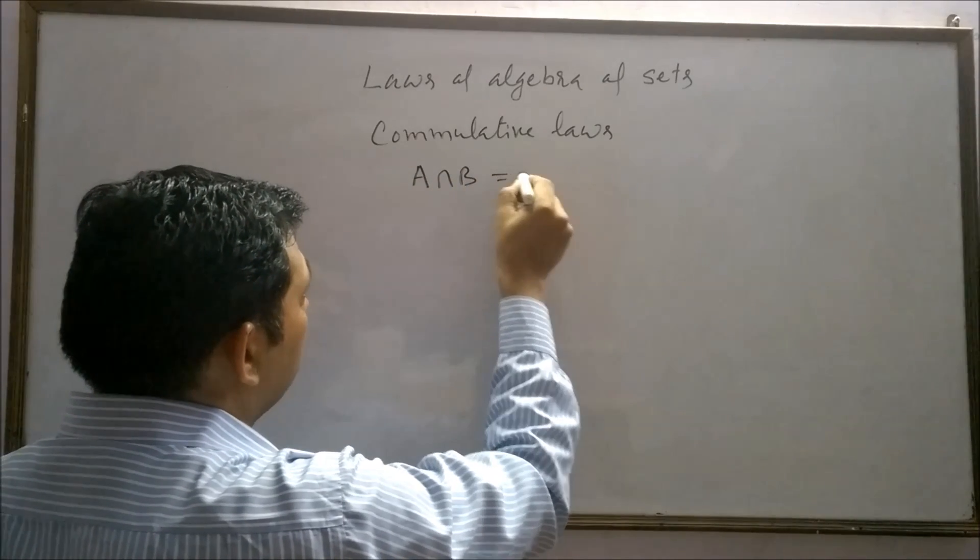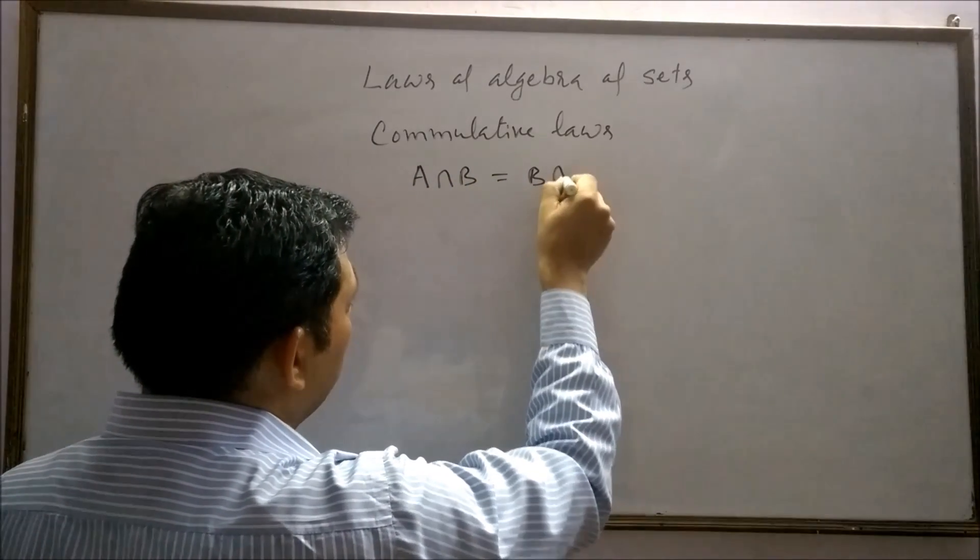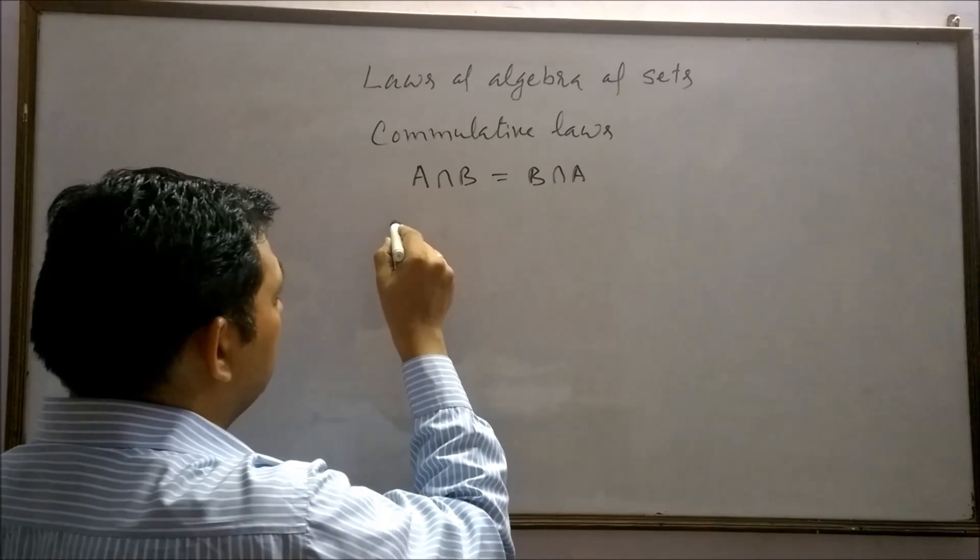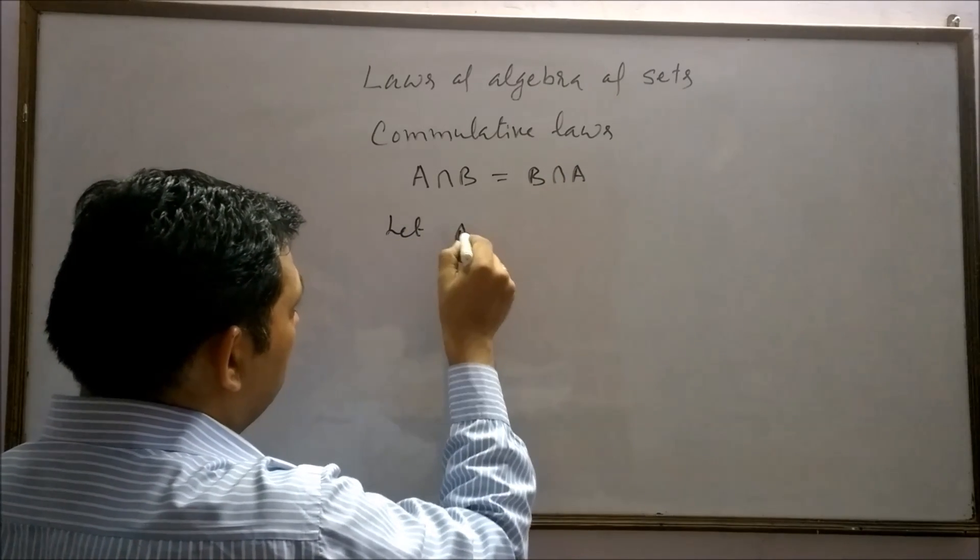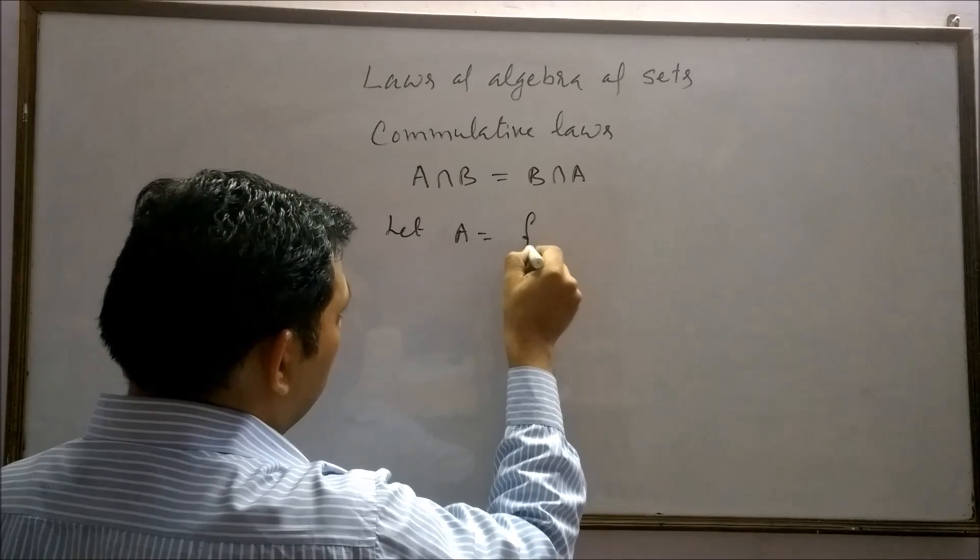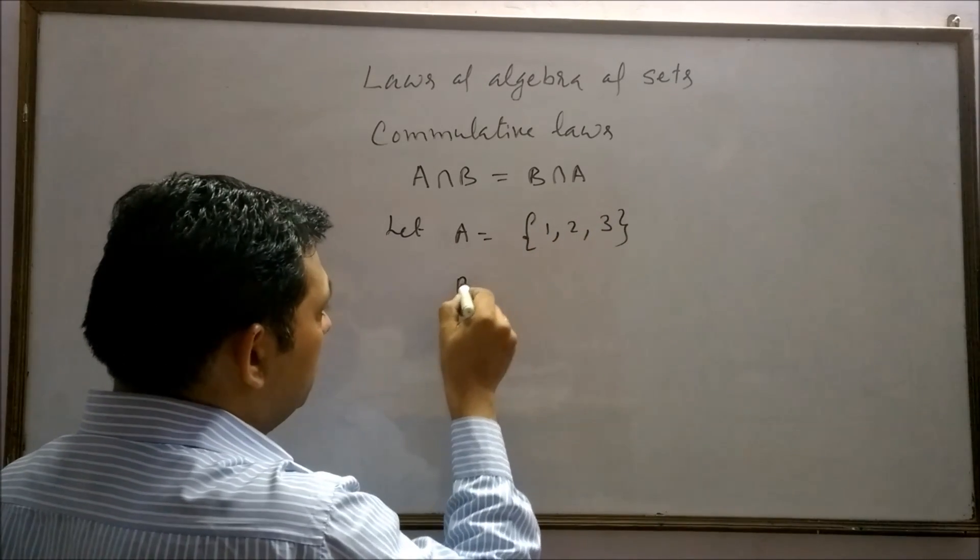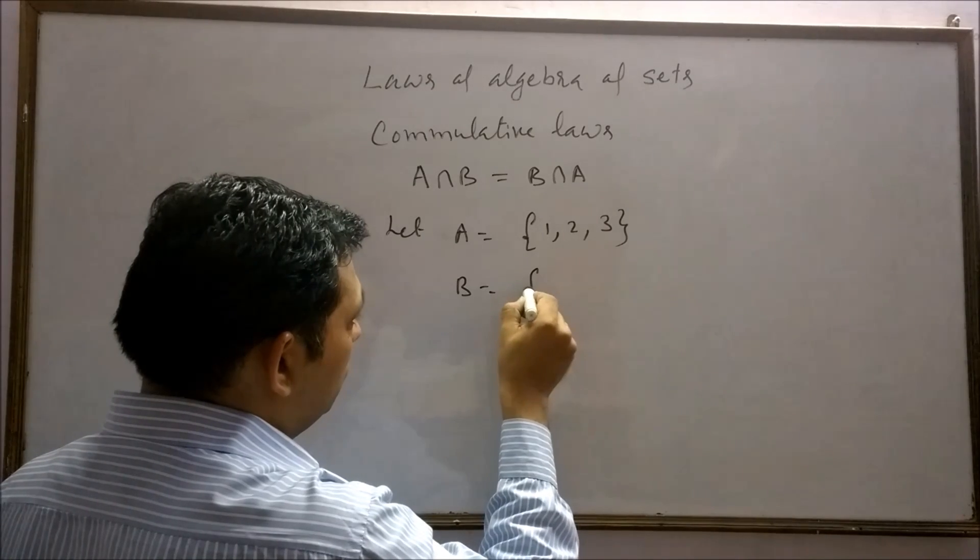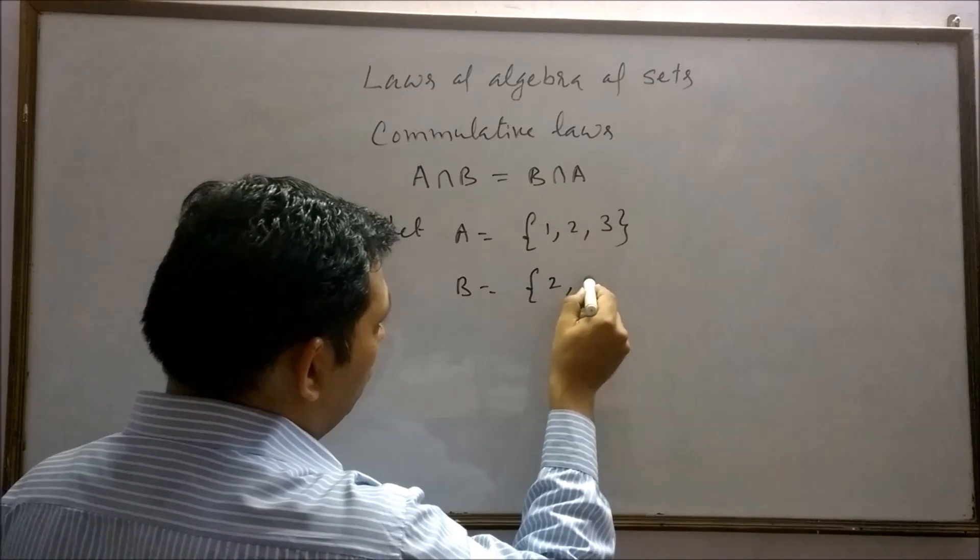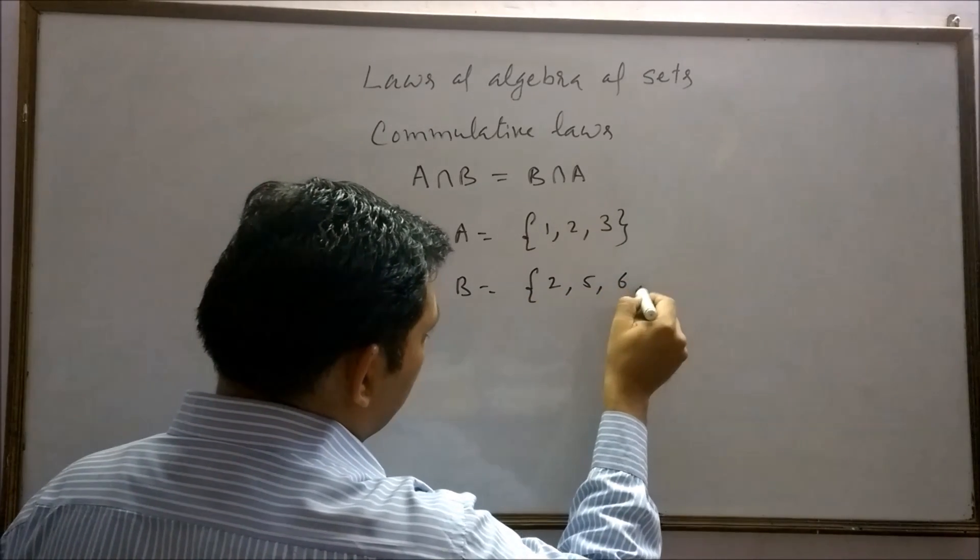A intersection B equals to B intersection A. Let A equals {1, 2, 3} and B equals {2, 5, 6, 7}.